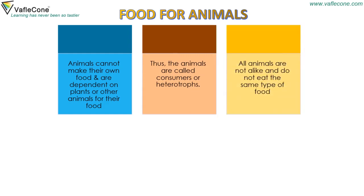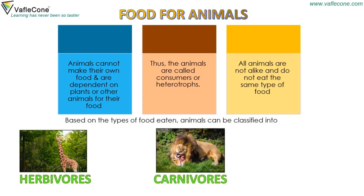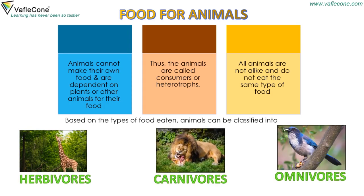All animals are not alike and do not eat the same type of food. Based on the types of food eaten, animals can be classified into Herbivorous, Carnivorous, and Omnivorous.